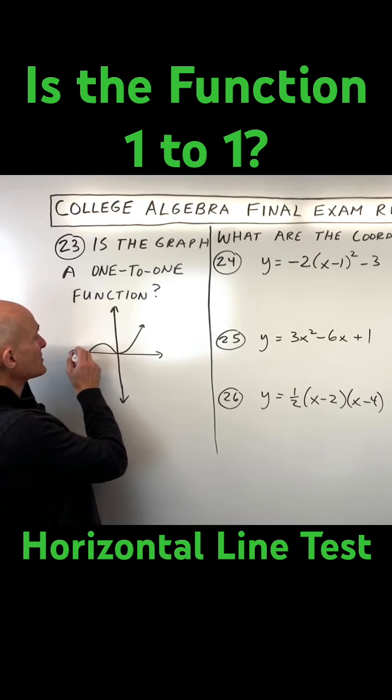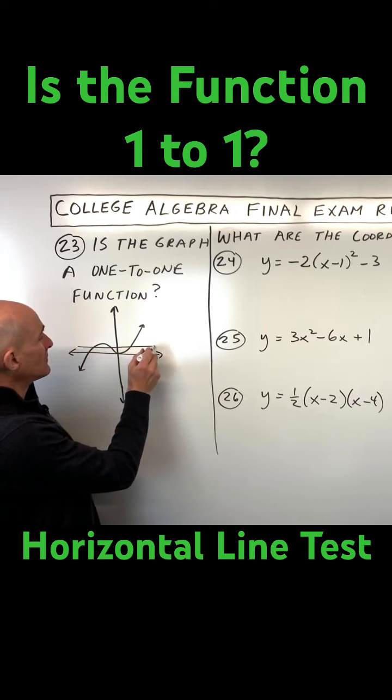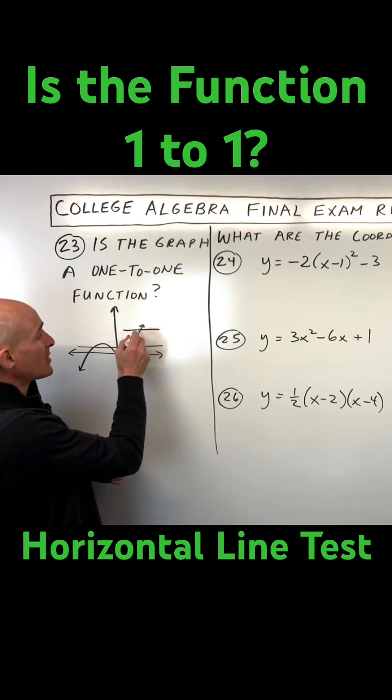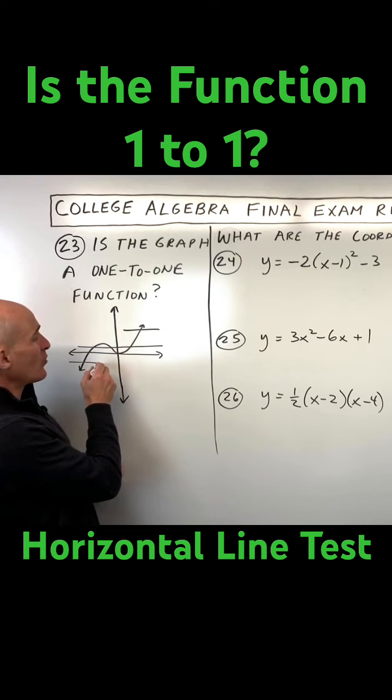This one, you can see if I draw a horizontal line, it's actually crossing the graph at more than one point. Over here, it only crosses at one point. Over here, only one point.